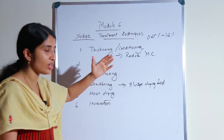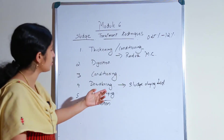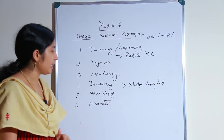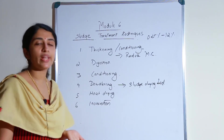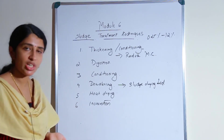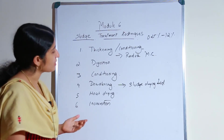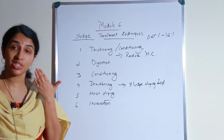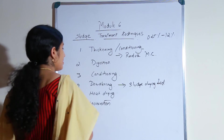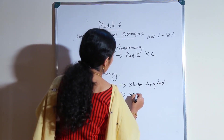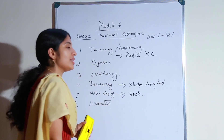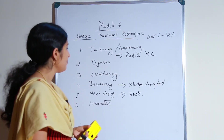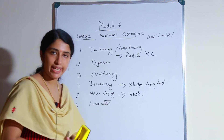Along with moisture content, the volume of sludge also gets reduced in the dewatering stage. The next step is heat drying. In a rotary kiln or in a furnace, we heat the sludge with the purpose of further reducing the moisture content still present. It is done at a temperature of 350°C using a rotary kiln or a furnace.